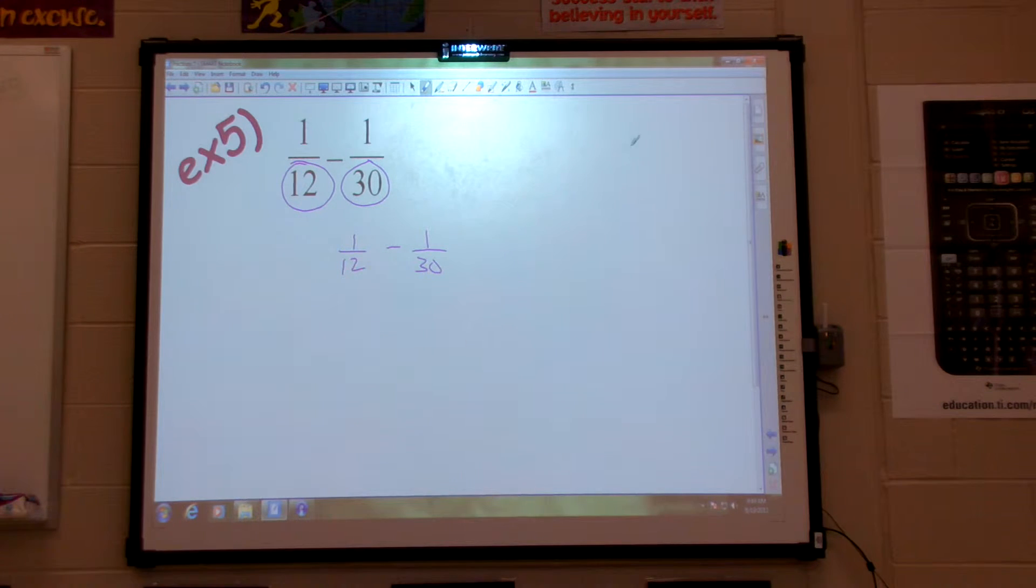Remember the easiest way to find that is take the biggest number and make a list. Thirty, add another thirty, get sixty, ninety, and then see which one twelve will go into first.